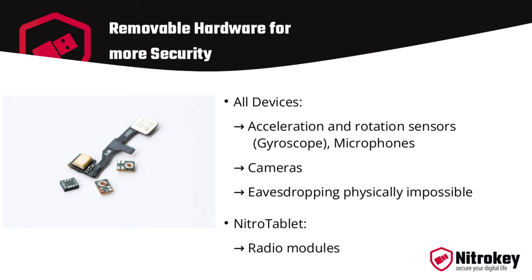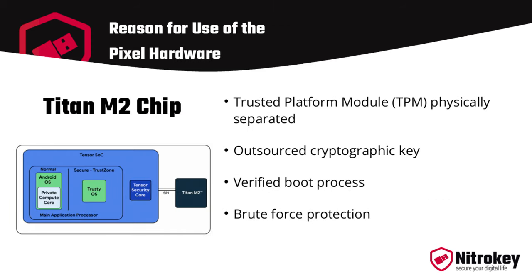For Nitro Tablets, all radio modules can also be removed to physically prevent unintentional radio communication. Despite removed microphones, phone calls can still be made with an external headset. Along with the Pixel hardware comes the Titan M2 chip — a hardware security component physically separated from the rest of the processors. This trusted platform module (TPM) is used to generate and store cryptographic keys, PIN, password, and fingerprints, protecting them from access by the operating system and securing the verified boot process.